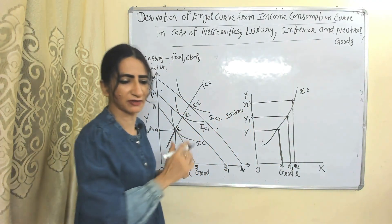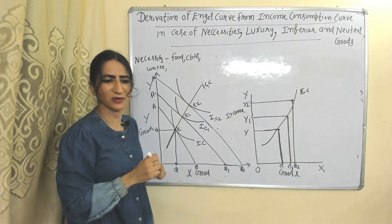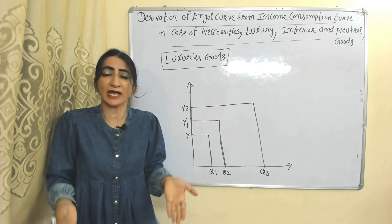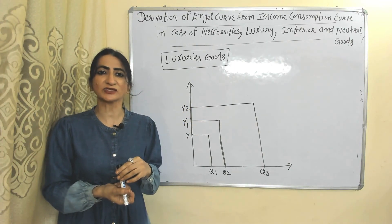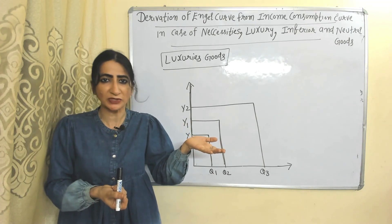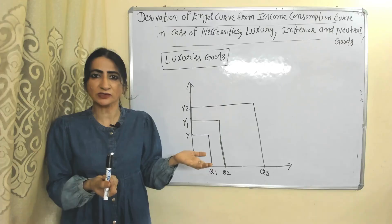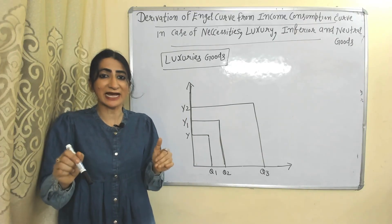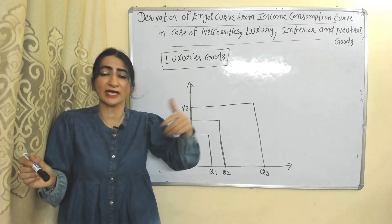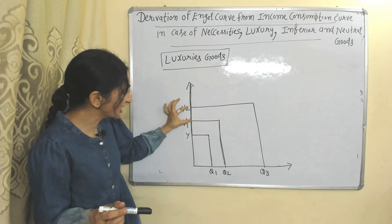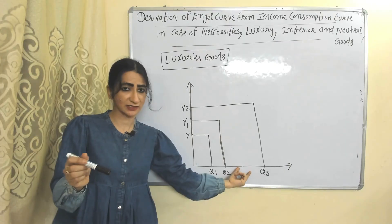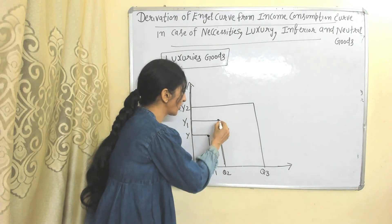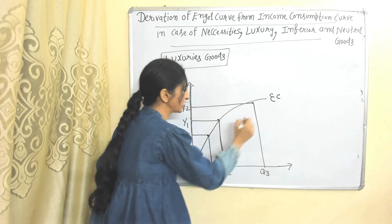This curve is our income consumption curve. Now we'll see the Engel curve in case of luxury goods. In case of luxury goods, demand increases more as compared to the increase in income. Why? Because luxury goods show our status, show our wealth, and show our success to others. That's why in the case of luxury goods, demand increases more as compared to the increase in income. Here you can see income is increasing at the same rate, but demand is increasing more — this gap is more as compared to this gap. When we join all these points, it represents our Engel curve in case of luxury goods.